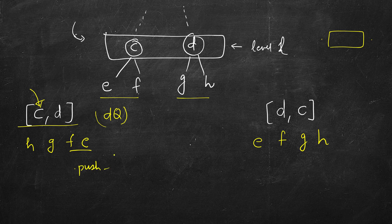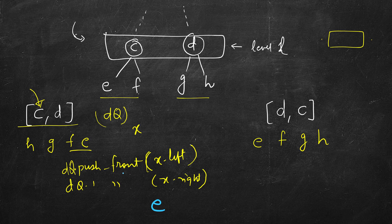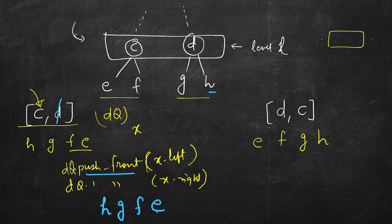Using the deque, when we pop an element X we do dq.push_front(x.left) then dq.push_front(x.right). So when we pop C, its left E is pushed, then right F is pushed to the front — giving F, E. Then we pop D, push left G to front giving G, F, E, then push right H to front giving H, G, F, E. This is exactly the reverse order we wanted.